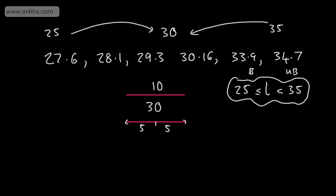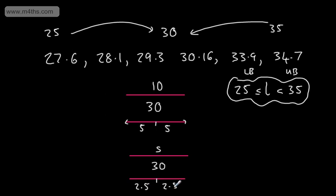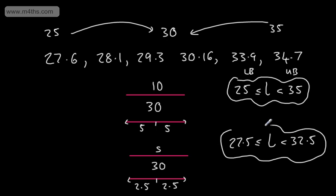Let's make the interval slightly tighter and look at all values that round to 30 to the nearest 5. This time we're playing with 5 and splitting that up: 2.5 below and 2.5 above. So the length could be equal to or greater than 27.5, yet strictly less than 32.5. All lengths in this interval will round to 30 to the nearest 5.